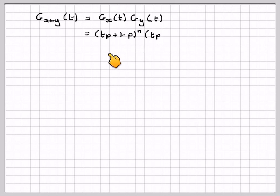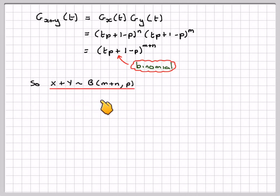That's going to be tp plus 1 minus p to the power of n times tp plus 1 minus p to the n, which equals tp plus 1 minus p to the n plus m. This is also a binomial of the same format, and therefore X plus Y will follow a binomial distribution with parameters n plus m and p.